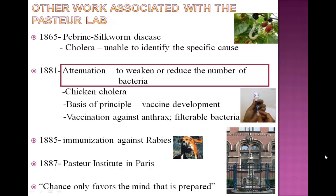In 1881, Pasteur and his co-worker Charles Chamberland discovered the process of attenuation. Attenuation is the process to either weaken or reduce the number of bacteria, using several means such as heating, different growth conditions, successive inoculations in animals, and methods of damaging bacterial cells. They sought to weaken the bacteria that causes chicken cholera. They gave this attenuated strain of bacteria to chickens, followed by a lethal dose of the pathogen, and the animals did not develop cholera. Attenuation is the basis of the principle behind vaccine development.